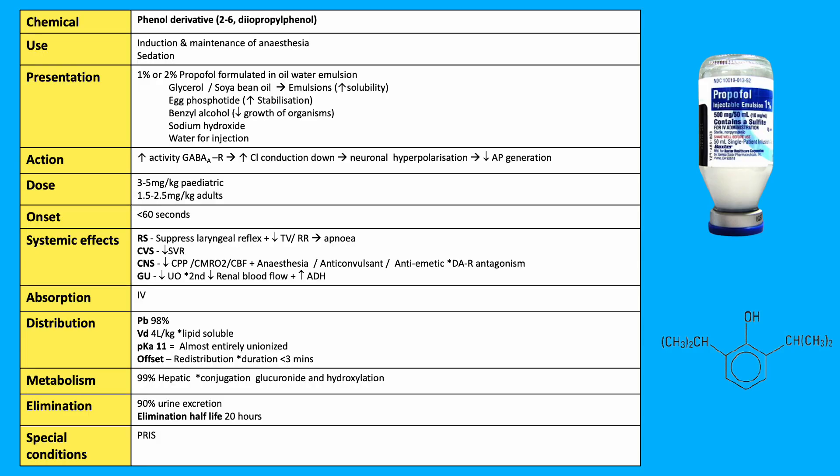Propofol is the most commonly used intravenous agent for induction of anaesthesia. It's a phenyl derivative, which means it's a chemical compound consisting of one or more hydroxyl groups bound directly to an aromatic hydrocarbon.